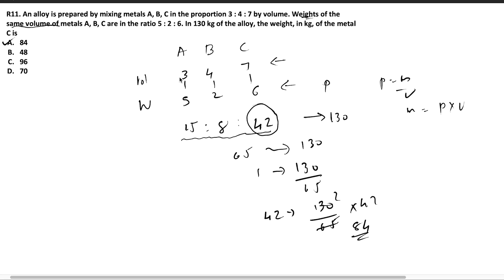So basically all you did is multiply volume with weight per volume, and you will get the ratio as 15 is to 8 is to 42. And the weight given here is 130 kilogram, which means you only have to double these values to get the actual weight of components in the alloy. So 42 into 2, you will get 84. So option A is the answer. I hope you understood the solution. You might feel confident about solving this question right now, but come back to it tomorrow and try to solve this question again. If you can solve it, then you have understood properly or else go to the solution again. And if you have any doubts, you can definitely ask through the comments and I will reply to you.